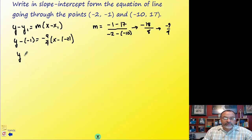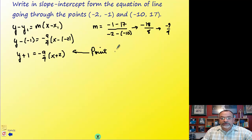So y minus the y-coordinate equals my slope times x minus the x-coordinate. And then we're going to simplify this: y plus 1, negative 9 fourths, x plus 2. Now you'll notice right here, this is the point-slope form of the equation. So that's the first form that we talked about. Point-slope form.